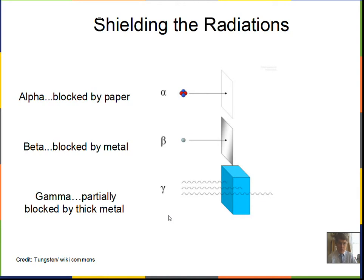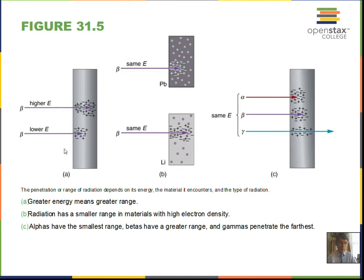Why is this the case? Here we have two betas, where one is more energetic than the other. The beta with higher energy is able to go a further distance into shielding material. With the same energy particles, comparing lead versus lithium — lead being much more dense — the betas are stopped in a shorter distance in lead. Comparing alpha, beta, and gamma: the alphas stop right at the surface, the betas go deeper, and a significant fraction of gammas can pass through material if it's not dense enough.